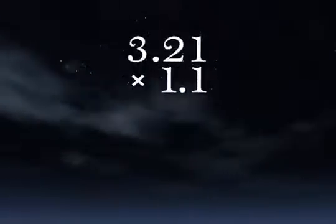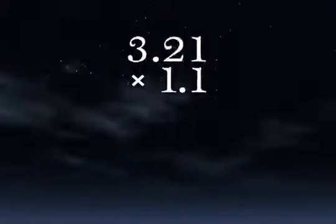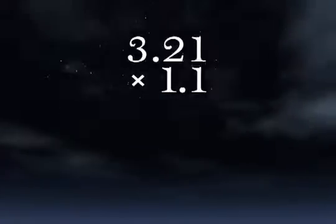When multiplying decimals, look at both numbers in the problem. Count how many digits there are total to the right of the decimal. That's how many digits there will be to the right of the decimal in your answer. In this problem, there are three digits to the right of the decimal. The answer will then also have three digits to the right of the decimal.